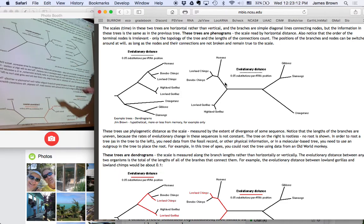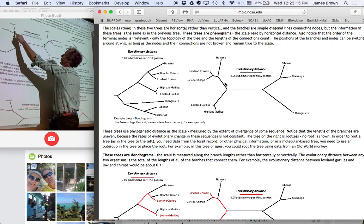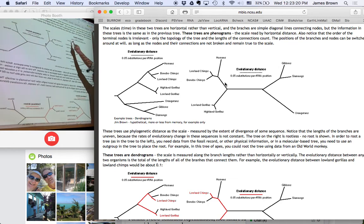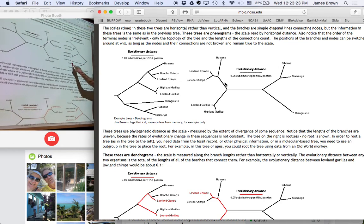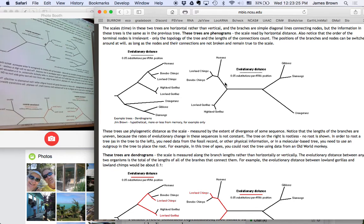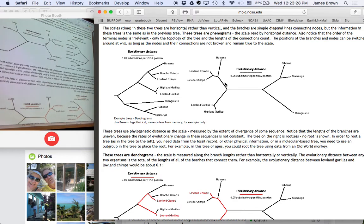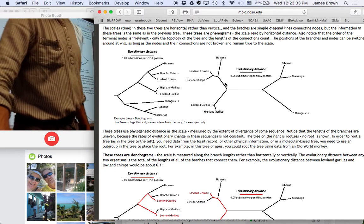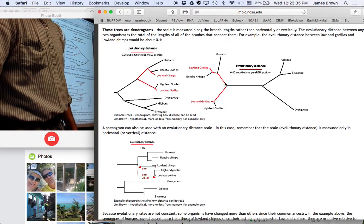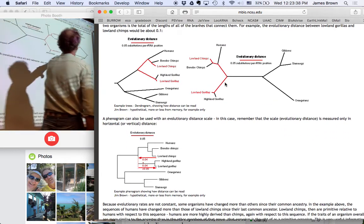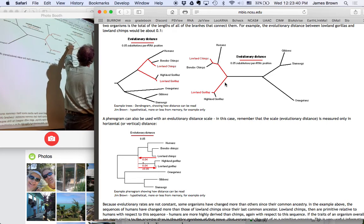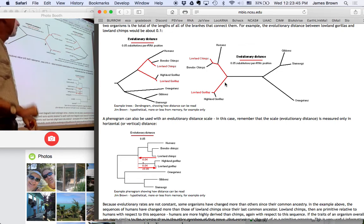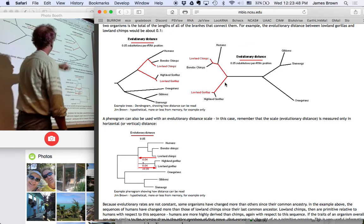So if I measure, for example, from humans to gibbons, and I measure along these branches to determine their evolutionary distance, they should be the same as if I measure along here. And that's it. You can arrange these in any way that you want. The key, then, is to remember that that's how the trees work. And so if I want to know the evolutionary distance between lowland chimps and lowland gorillas, I measure along those branches in a dendrogram. It doesn't matter how I draw it. It should be the same.